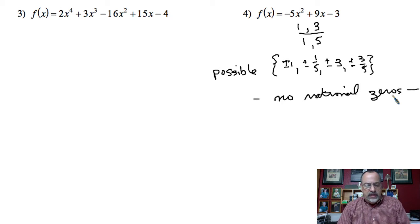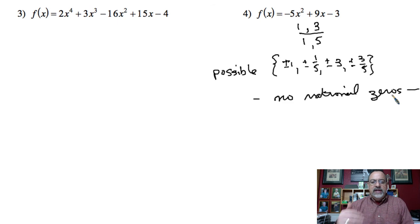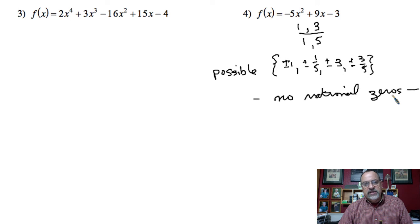To sum it up: the rational zeros theorem allows me to make a list of possible rational zeros, and then the remainder theorem lets me determine which numbers from that list are actual zeros of the polynomial. This does not give me all of the zeros — just the rational ones. It's a first step toward finding all zeros of a polynomial. In the next videos, we'll go further and find imaginary and irrational zeros.